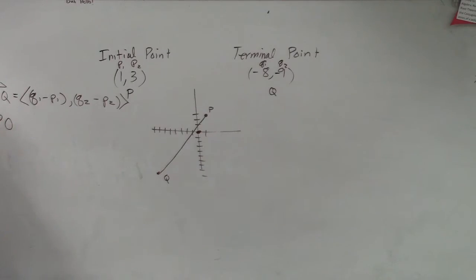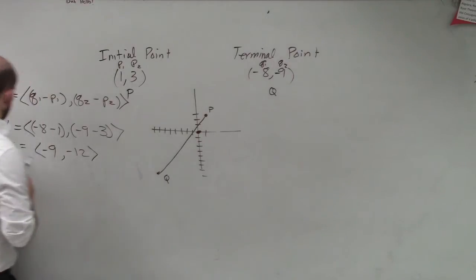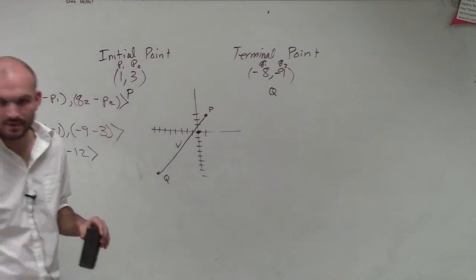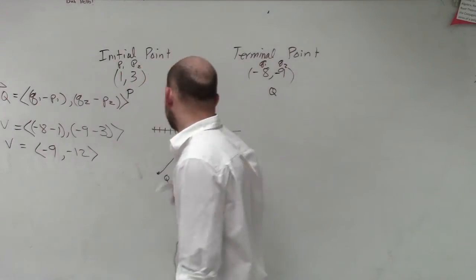So therefore, our component vector, we'll just call V, because it's going to be in component form, is now going to consist of negative 8 minus 1, comma, Q2, which would be negative 9 minus 3. Negative 8 minus 1 is negative 9, comma, negative 12. So we're going to call this vector, I guess I won't confuse you guys. I'll just keep calling it V. So we're just going to call this vector V, okay?